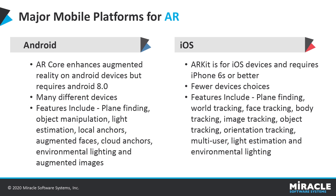Both major mobile platforms, Android and iOS, support AR and have their own kits with their own positives and negatives. AR Core for Android is made by Google and one of its big advantages is that it works across many different types of devices — from low-end to high-end — anything running Android 8 or later, though it does have a little less functionality than iOS. For iOS, you must be using an iPhone 6s or better, so you have fewer device choices, but you get a little more functionality with object tracking.